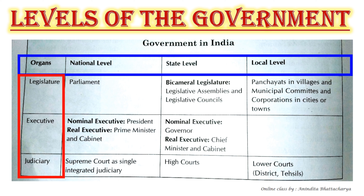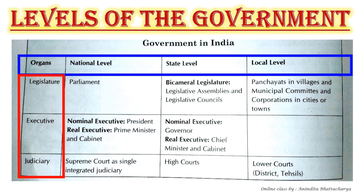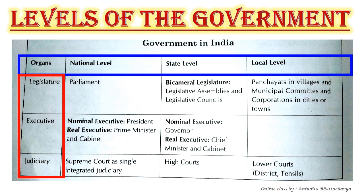The next organ is the Executive — the body which implements the laws. At the national level there are two executives: the Nominal Executive, which is the President, and the Real Executive, which is the Prime Minister and Cabinet. At the state level, the Nominal Executive is the Governor, and the Real Executive is the Chief Minister and Cabinet. At the local level, the executives are government officials.